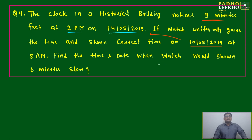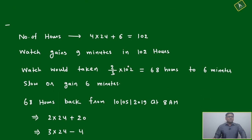Find the time and date when watch would show 6 minutes slow. Now further complexity - last question was just symmetric, 7 minute to 7 minute both, and we were finding at zero. Now here 9 minute fast some different date, correct time some different date, we have to find 6 minutes.